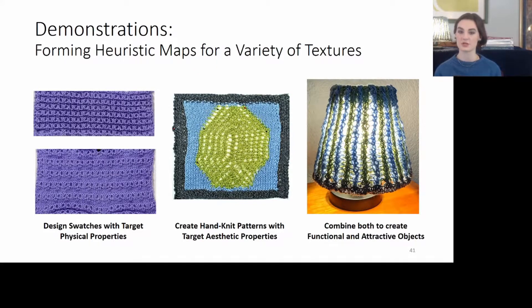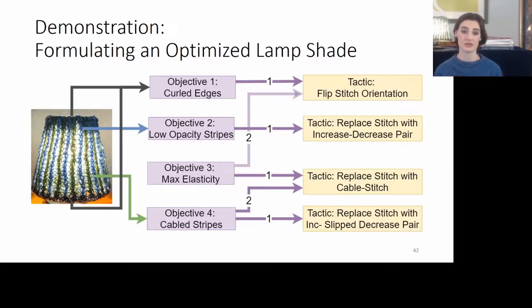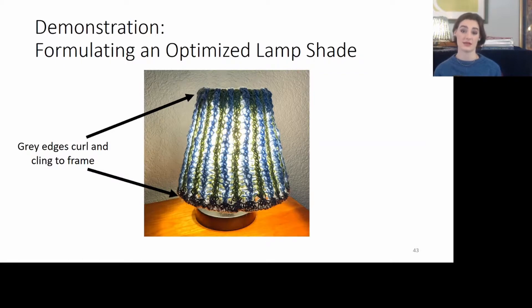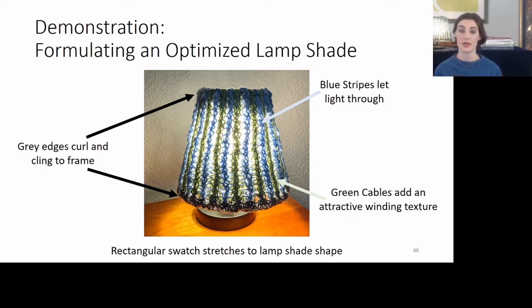In the paper, we present three demonstrations of creating a heuristic map using our extensible KnitGist library. To create a lamp, you first define a few objectives, such as curled edges that cling to the frame, maximizing elasticity so it can stretch around the frame, and adding aesthetic properties like reducing opacity so that it lets light through, and adding cabled stitches to make it more complex. We then apply tactics based off of domain knowledge from knitting that support these objectives. As a result, we get a texture with a gray area which clings to the frame, blue stripes which let a little bit of light through, and green cables which increase the complexity of the texture. It's worth noting that this is a rectangular swatch, but it is stretched around the conical lampshade because it has increased elasticity.